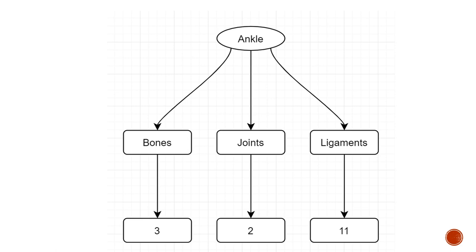To summarize, the ankle consists of bones, joints, and ligaments. There are three bones, two joints, and eleven ligaments in total. The eleven ligaments are grouped into three different groups.